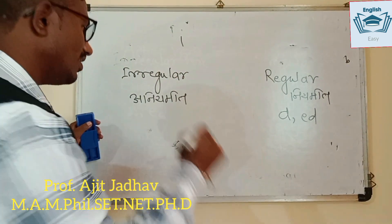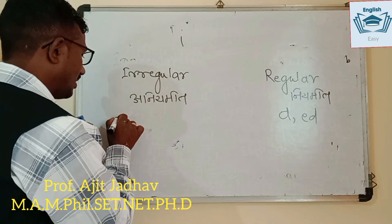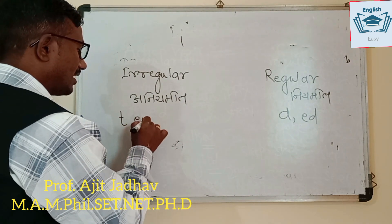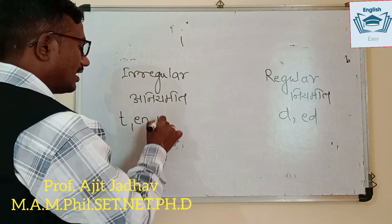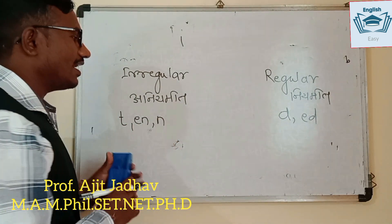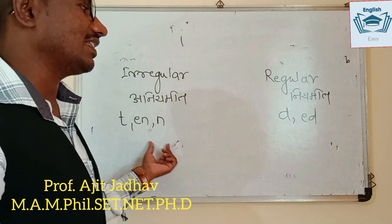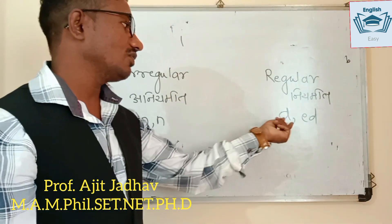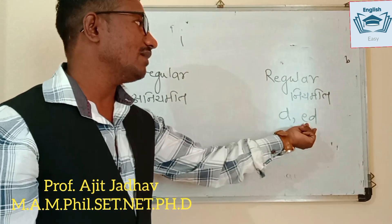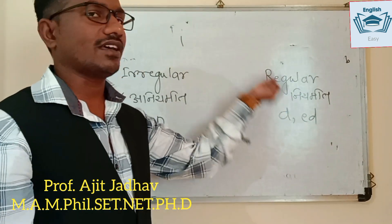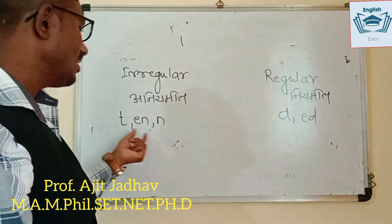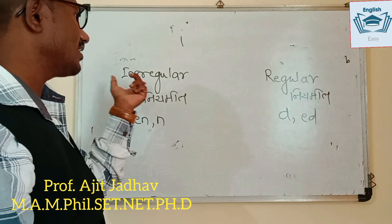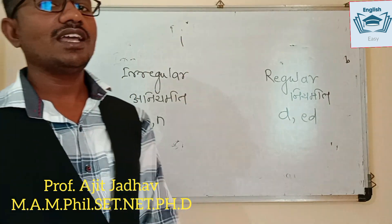And if we have a regular verb, it ends with D-E-N-Q-E. So what should you be reading? The word ending in D is the regular form, and DEN is the irregular form.